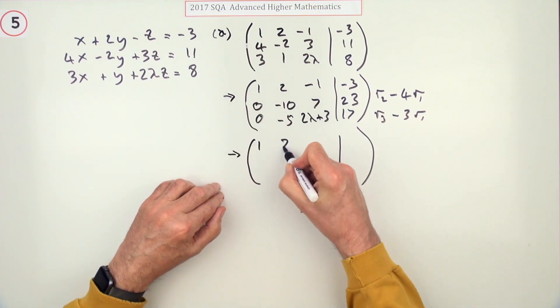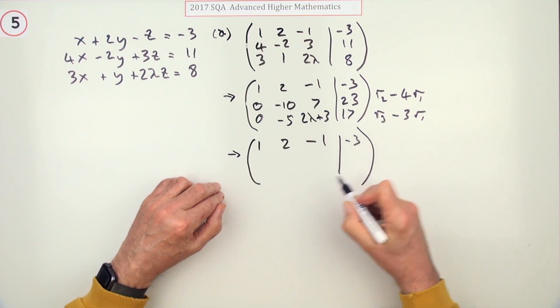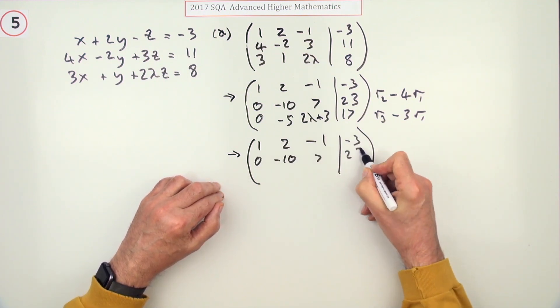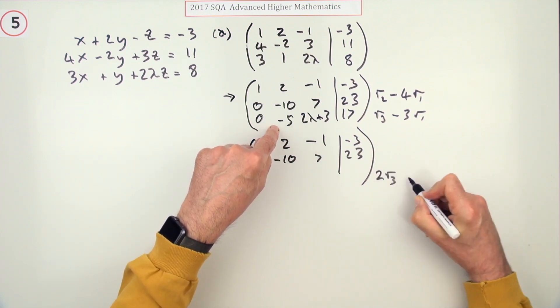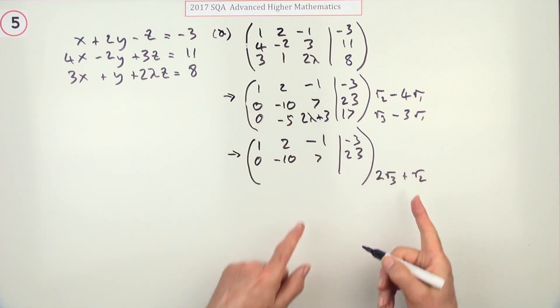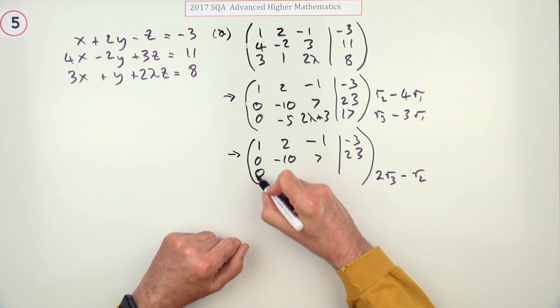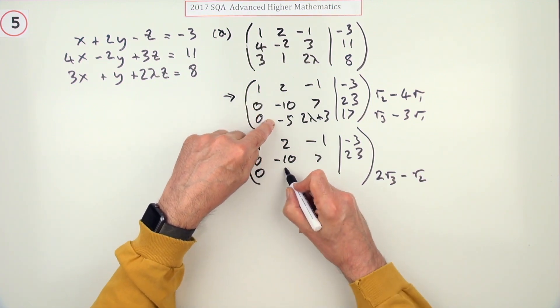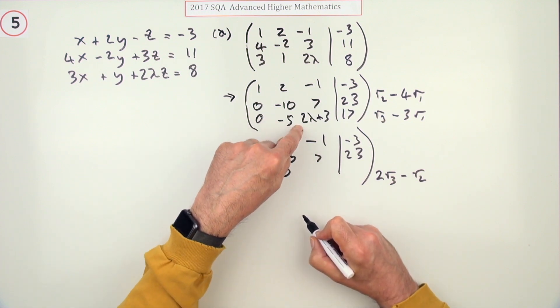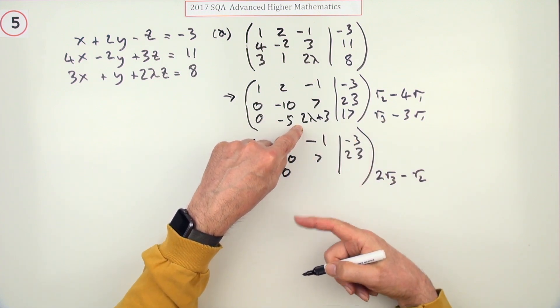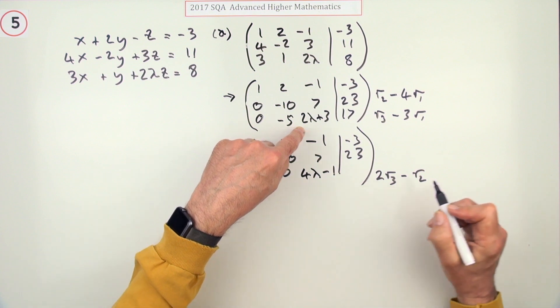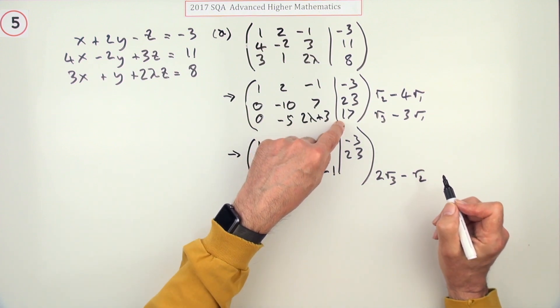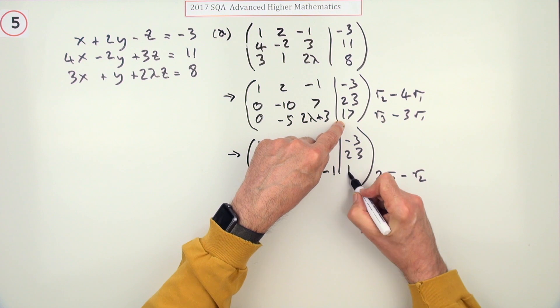But those two are quite useful. So I'm not going to change these ones. And for the final one I'm going to take 2 of row 3 and subtract row 2. So that stays as a 0. So I've got negative 10 take away a negative 10 is 0. I'll have 4 lambda plus 6 but take away a 7 means I've got 4 lambda minus 1 overall. This one gets a bit messier. I'll have 2 of them which is 34. 34 take away 23 is 11.